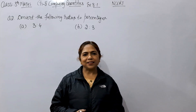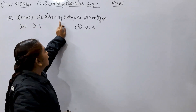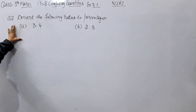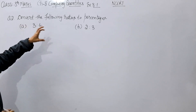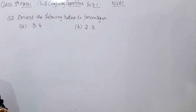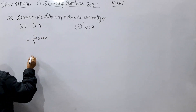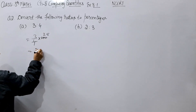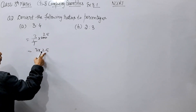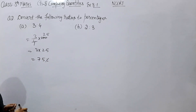Let's start Question 2: Convert the following ratios to percentage. To change any ratio to percentage, we multiply by 100. First part: 3 ratio 4 — so 3 by 4 multiply 100. 4 goes into 100 giving 25, and 3 multiplied by 25 gives 75. So our answer is 75 percent.